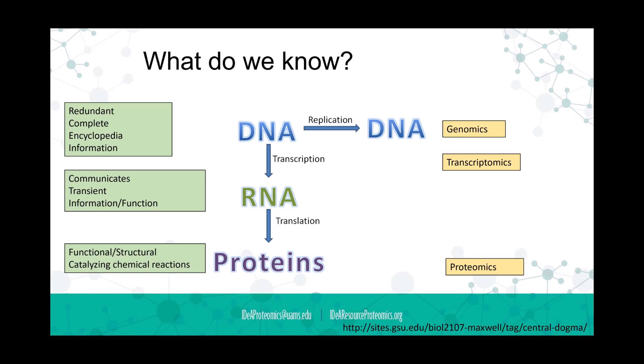Here's what makes proteomics so challenging: in genomics, you can amplify DNA using instruments that take a small amount of DNA and amplify it to a large amount, making it easy to get a signal. With proteins, you cannot amplify them. You have to take cells, break them apart, get the protein out, and analyze it at whatever concentration it is — and that makes it really challenging.